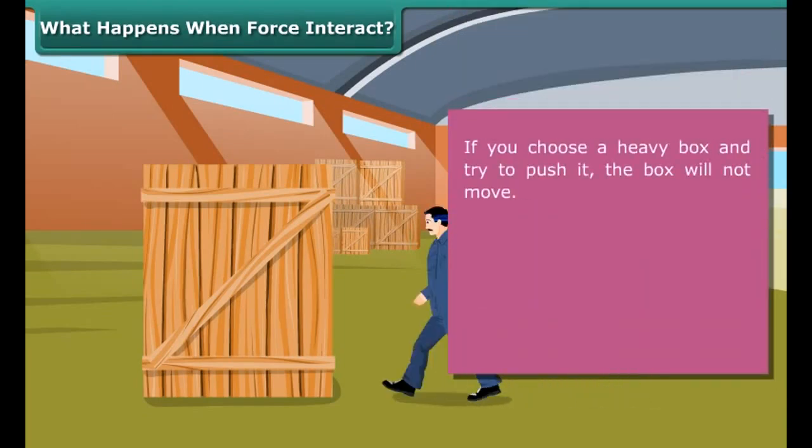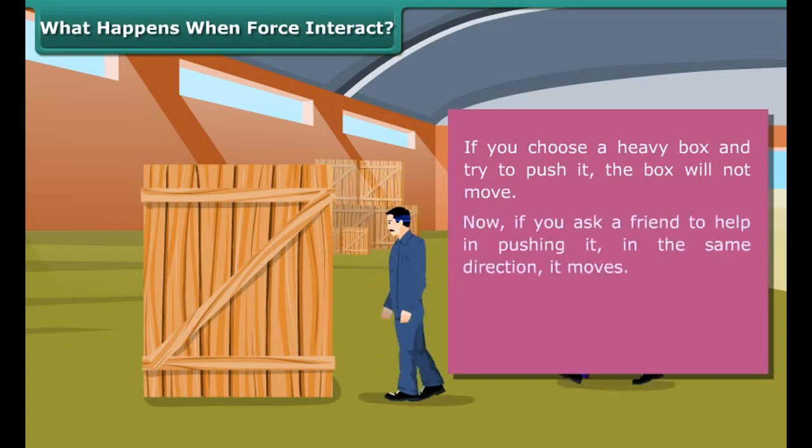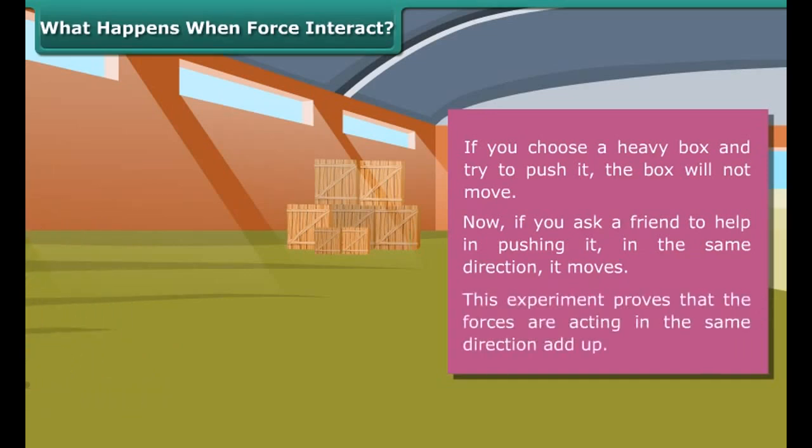What happens when forces interact? If you choose a heavy box and try to push it, the box will not move. Now if you ask a friend to help in pushing it in the same direction, it moves. This experiment proves that the forces acting in the same direction add up.